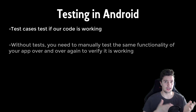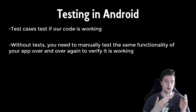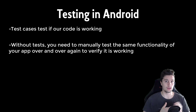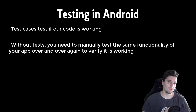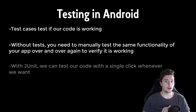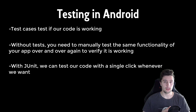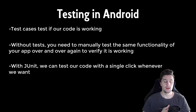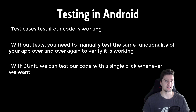That is the real problem of manual testing — you need to test the same functionality over and over again, even if it was already working, and that just costs so much time. This is where JUnit comes into play. JUnit is a very popular library that is also included in your dependencies by default in Android Studio.